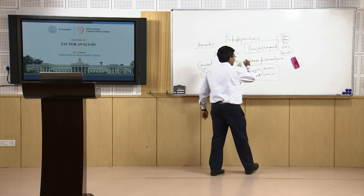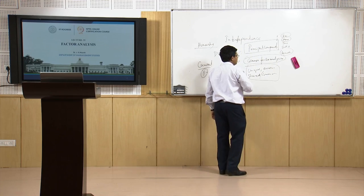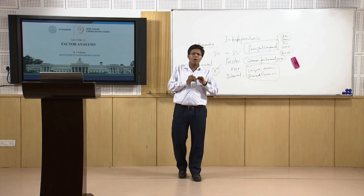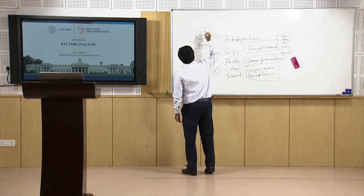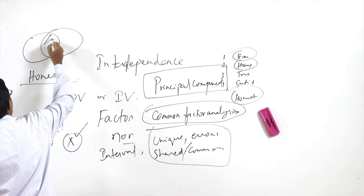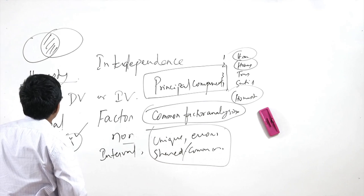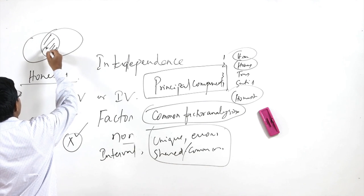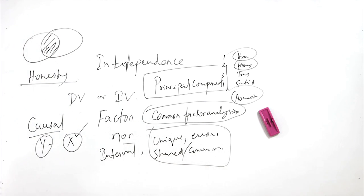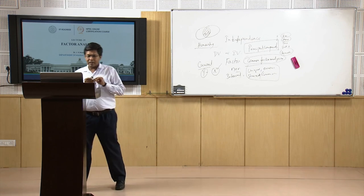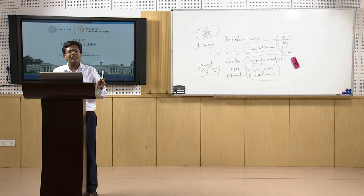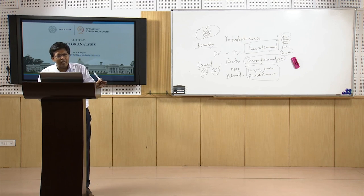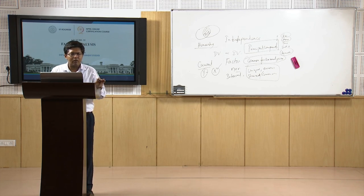In common factor analysis, only the shared or common variance is taken — like the common area in a Venn diagram — and the unique and error variances are ignored. The most utilized method is principal component analysis; common factor analysis is seldom used. Principal component analysis is mostly what researchers use.